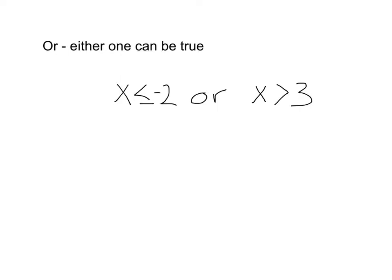How about 6? Is 6 less than or equal to negative 2? No. But, it is greater than 3. So, 6 is true. What about negative 20? Well, negative 20 is less than or equal to negative 2. So, even though it's not greater than 3, since it's an or, this is still also true.